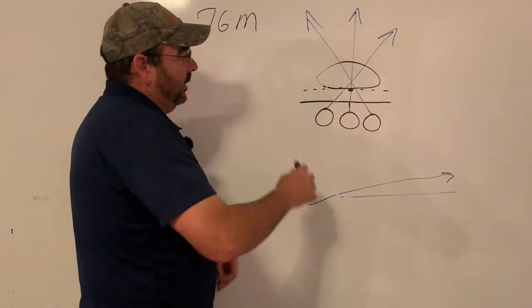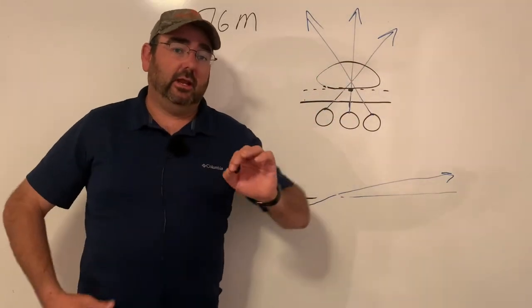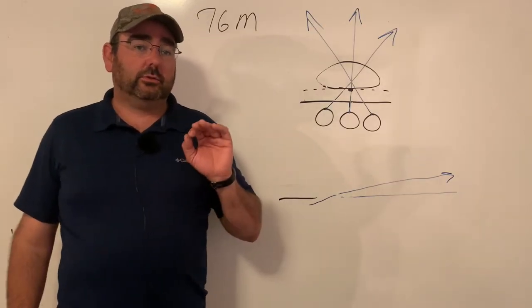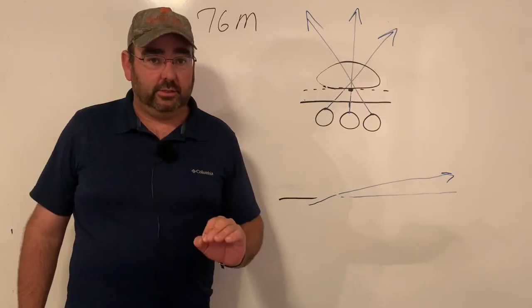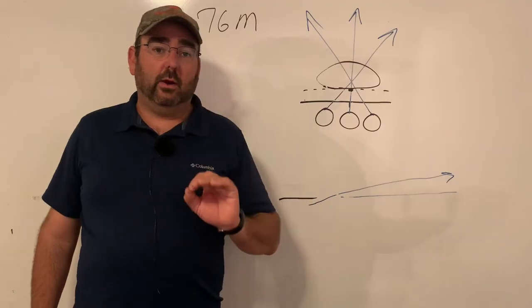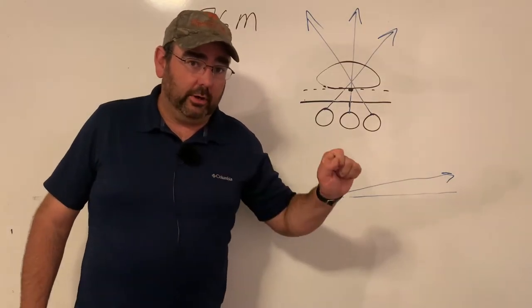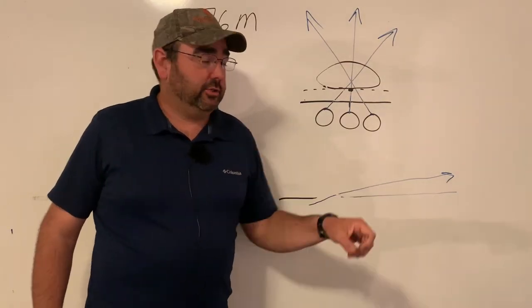So it's a nice big oval. I can actually pick up the target faster this way. Now the target's not beating my vision. Now I can get on it with my eyes, drive the gun to it, and hit it.